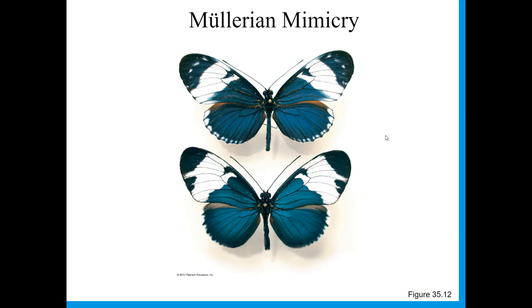So these are two butterflies. These are both in the Heliconius genus, but they are indeed separate species. And they are evolving to look more and more like one another. They are both slightly toxic, and they're looking more and more like one another because they're both a little bit toxic.